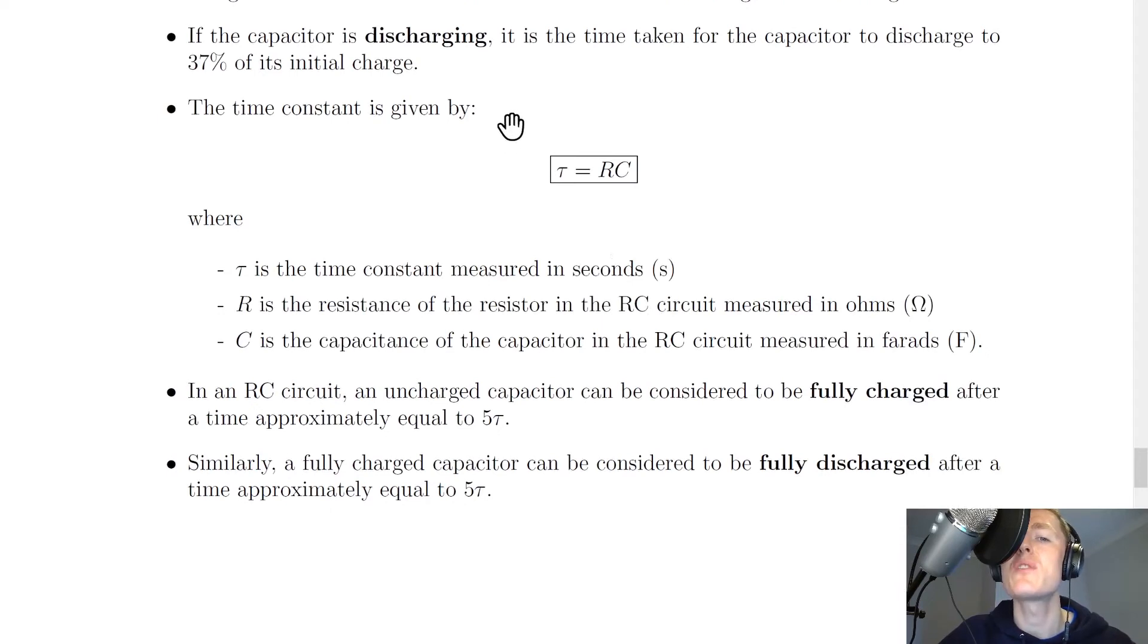The time constant is given by tau equals R times C, where tau is the time constant measured in seconds, R is the resistance of the resistor in the RC circuit measured in ohms, and C is the capacitance of the capacitor in the RC circuit measured in farads.